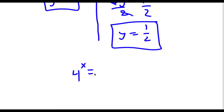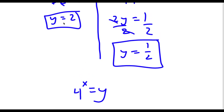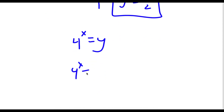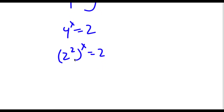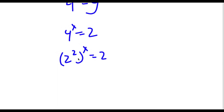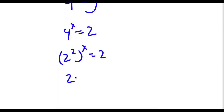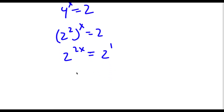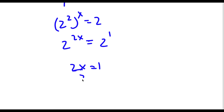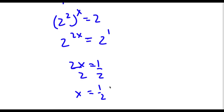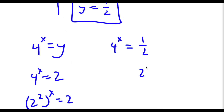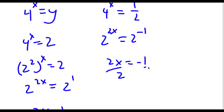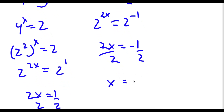Remember, 4 to the power of x equals y. If y equals 2, then 4 to the power of x equals 2. Since 4 equals 2 squared, I have 2 squared to the power of x equals 2, so 2 to the power of 2x equals 2 to the power of 1, meaning 2x equals 1 and x equals 1 half. For y equals 1 half: 4 to the power of x equals 1 half, which is 2 to the power of negative 1, and 4 to the power of x is 2 to the power of 2x. So 2x equals negative 1, and dividing by 2 gives x equals negative 1 half.